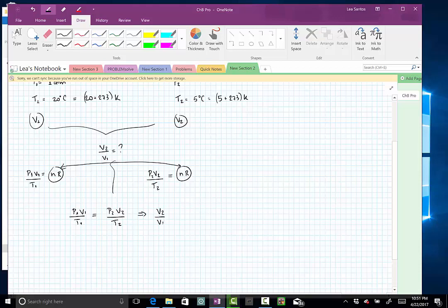V2 divided by V1, that's what we're after, is equal to P1 multiplied by T2, divided by P2, divided by T1. I have V2 here